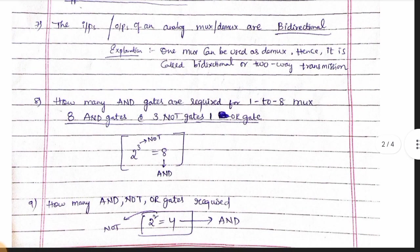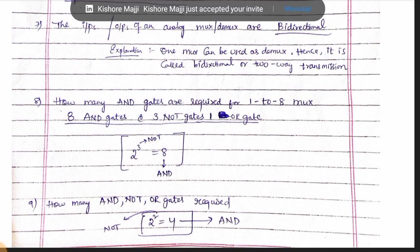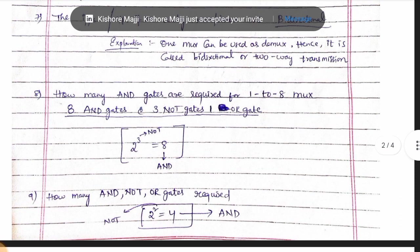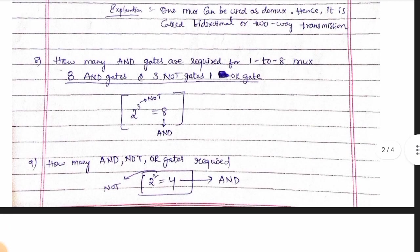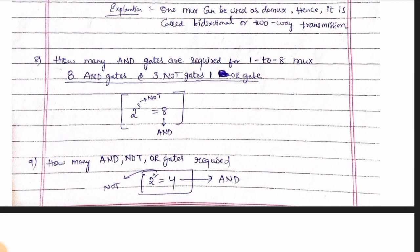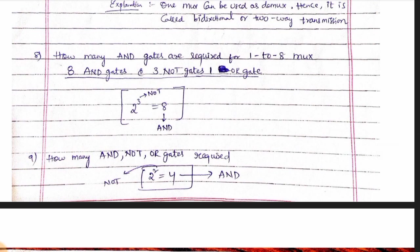How many AND gates are required for a 1-to-8 mux? Since 2 to the power of 3 is equal to 8, you can choose a single AND gate as the base value. For 2 to the power of 3 and 2 to the power of 4, when you choose a single AND gate, you get the result.